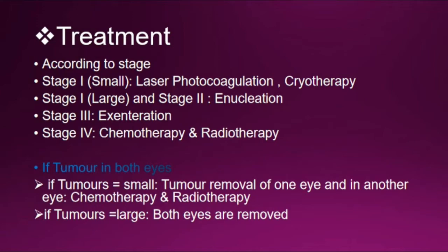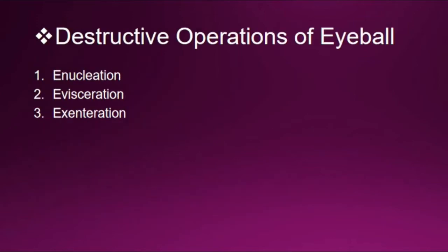Treatment according to stage: Stage 1 small tumor — laser photocoagulation and cryotherapy. Stage 1 large tumor and Stage 2 — enucleation. Stage 3 — exenteration. Stage 4 — chemotherapy and radiotherapy. If tumor is in both eyes and tumors are small — removal of one eye and in the other eye chemotherapy and radiotherapy. If tumors are large in both eyes — both eyes are removed.